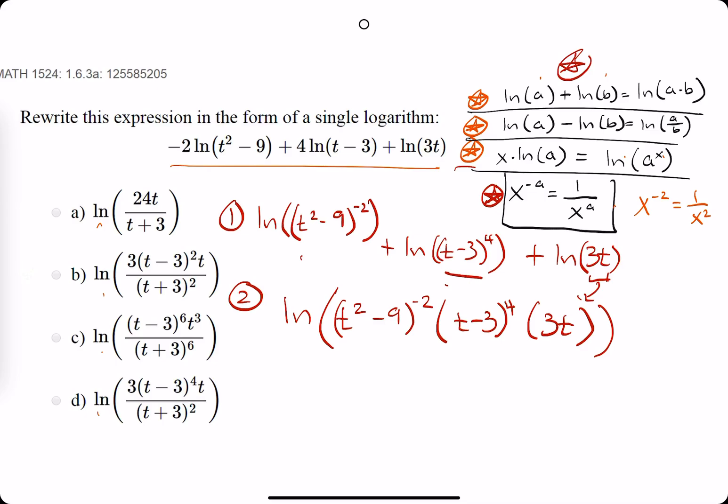So, we have everything inside a single natural log, but we still need to do some simplifying to get it how they have it in the answer choices here. So, this next step is where the little exponent rule comes in with the negatives up here. So, x to the negative 2 is the same as 1 over x to the positive 2. What that means is we can rewrite the first term here as 1 over t squared minus 9 to the positive 2. So, when it was negative 2 on top, we can move it to the bottom or denominator as a positive 2. So, then we can leave the other terms as they are.